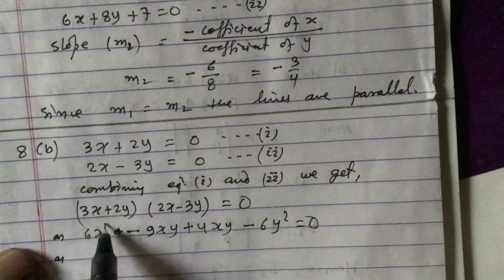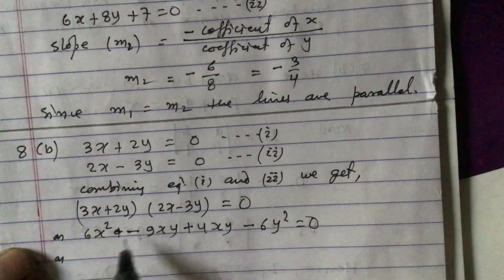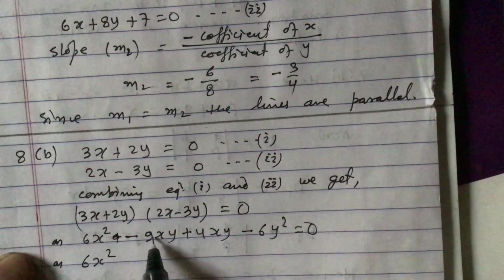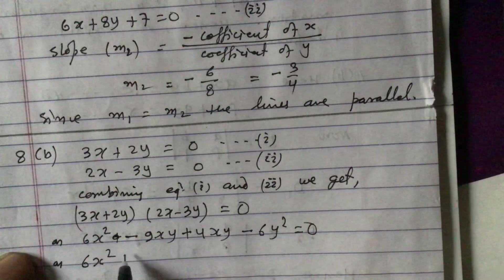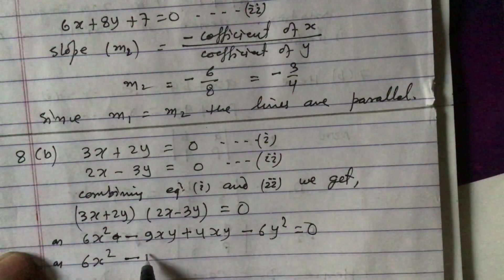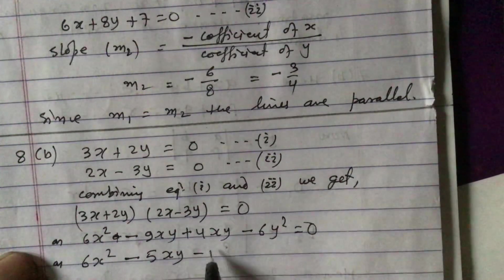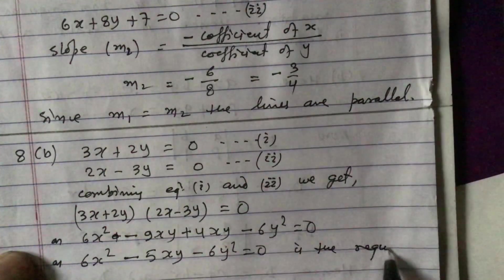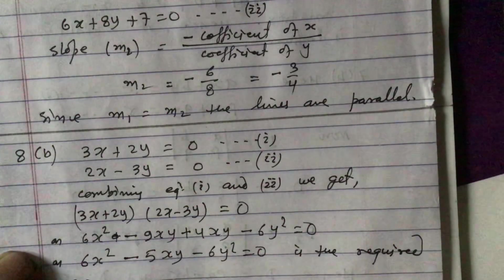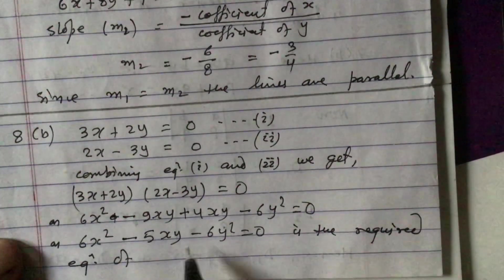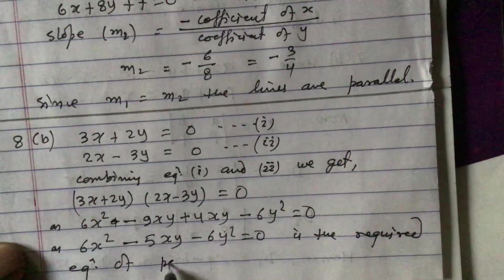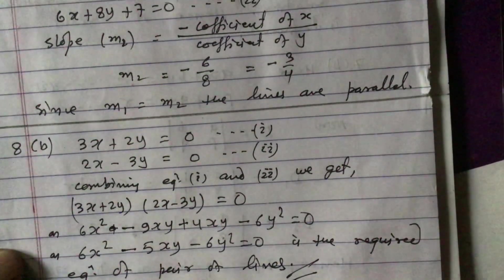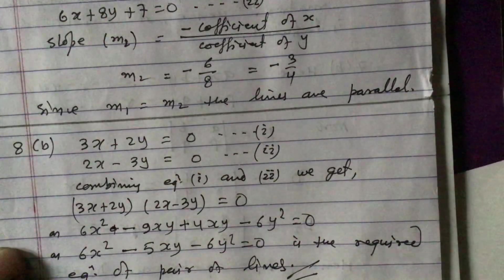So we have 6x squared, and combining the xy terms: minus 9xy plus 4xy gives minus 5xy, and minus 6y squared equals 0. Therefore, 6x squared minus 5xy minus 6y squared equals 0 is the required single equation of the pair of lines. Thank you for watching this video.